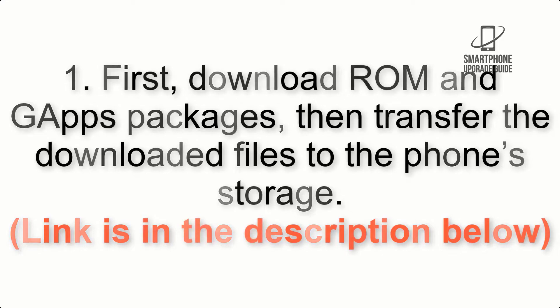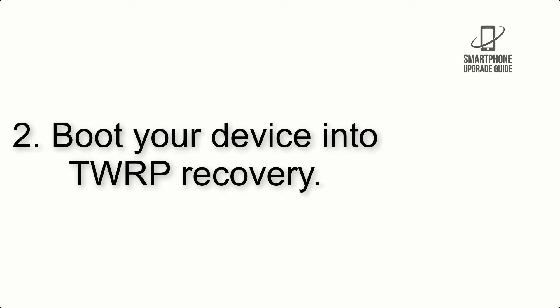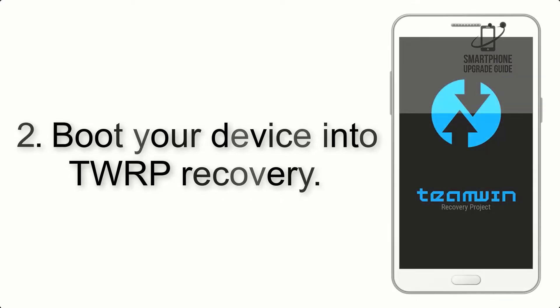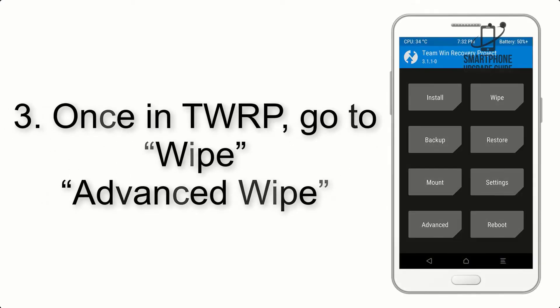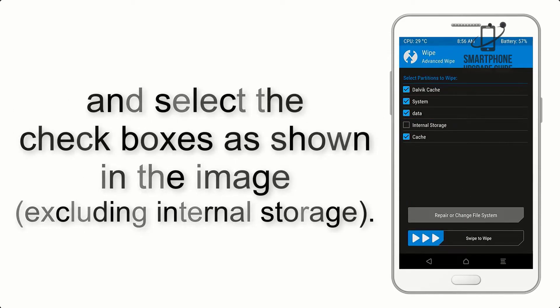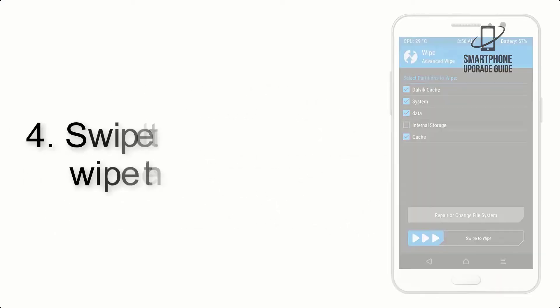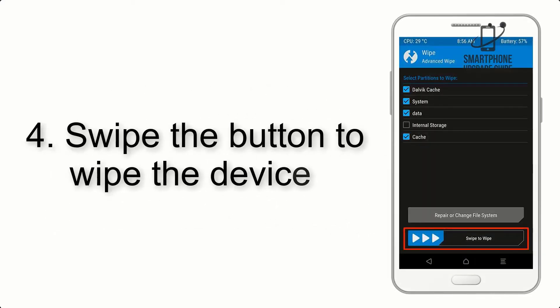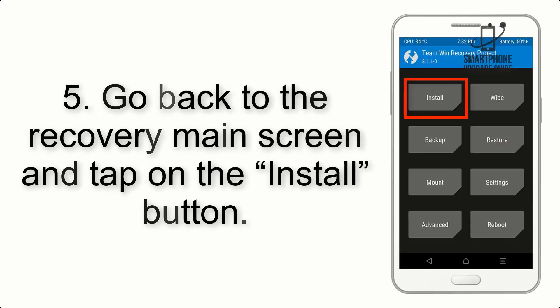Step 2: Boot your device into TWRP recovery. Once in TWRP, click on Wipe, then Advanced Wipe, and select the checkboxes as shown in the image, excluding internal storage. Step 4: Swipe the button to wipe the device. Step 5: Go back to the recovery main screen and tap on the Install button.